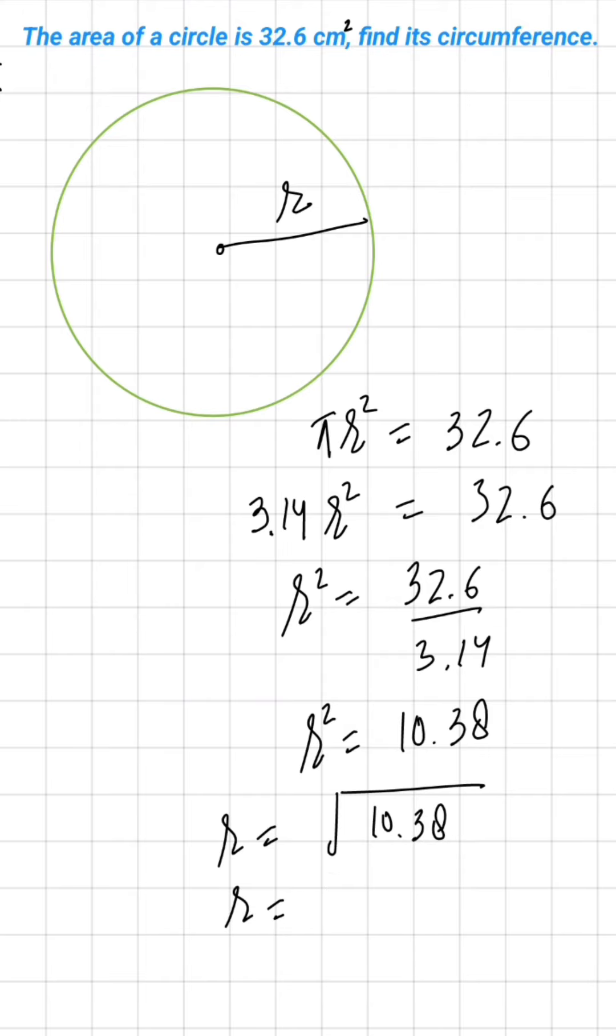And if you have to find the square root of 10.38, then this is 10 point something—sorry, 3 point something. So it is 3.22 cm.